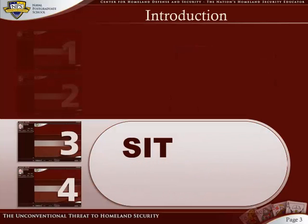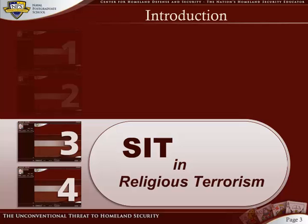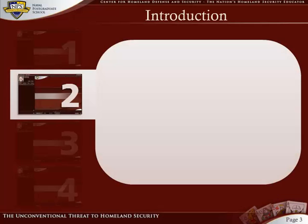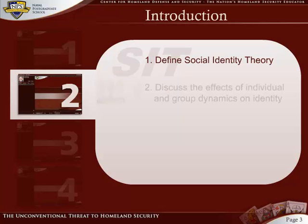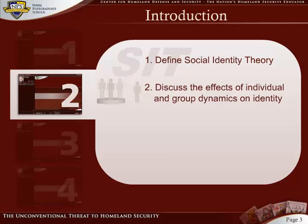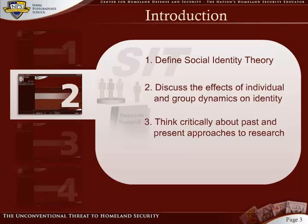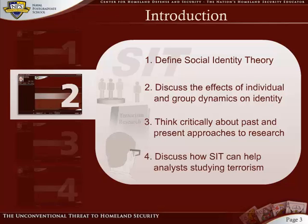In Modules 3 and 4, we will use SIT to zero in on current issues confronting terrorism studies. By the end of this module, you should be able to: 1. Define Social Identity Theory. 2. Discuss the effects of individual and group dynamics on an individual's understanding of his or her identity. 3. Think critically about past and present approaches to terrorism studies. 4. Discuss how social identity theory can be helpful to analysts studying terrorism, in particular, religious terrorism.